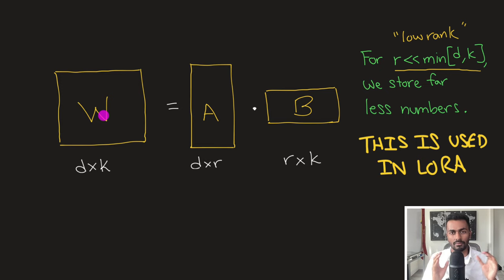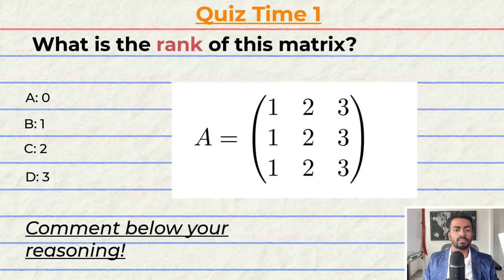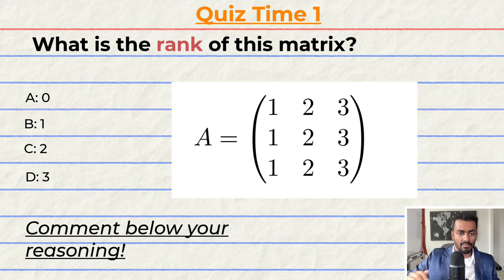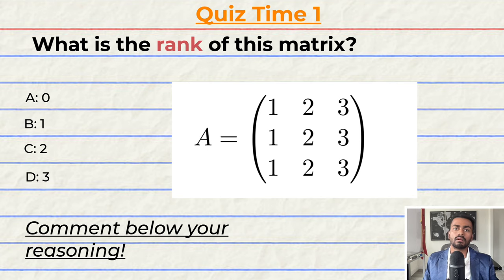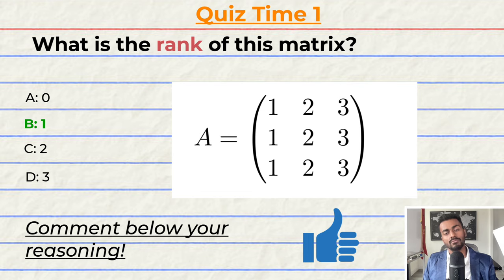Quiz time! Have you been paying attention? What is the rank of this matrix? A: 0, B: 1, C: 2, or D: 3? I'll give you a few seconds to answer. The correct answer is B. But can you tell me why? Give your reasoning in the comments below and let's have a discussion. If you think I deserve it, please consider giving this video a like. That's it for quiz time and pass one — but keep paying attention because I will be back to quiz you.